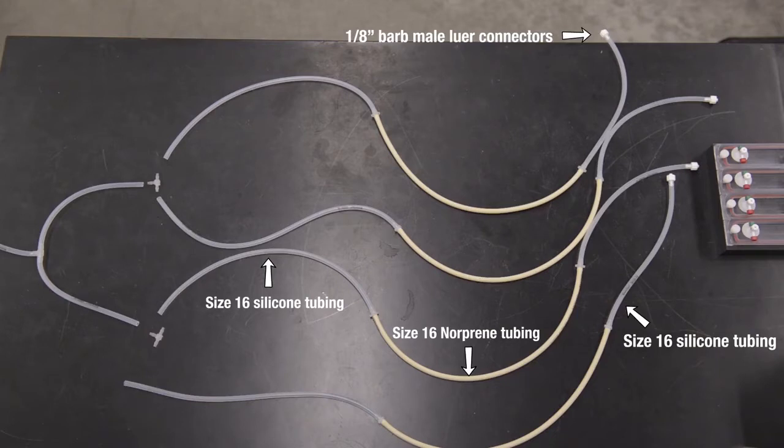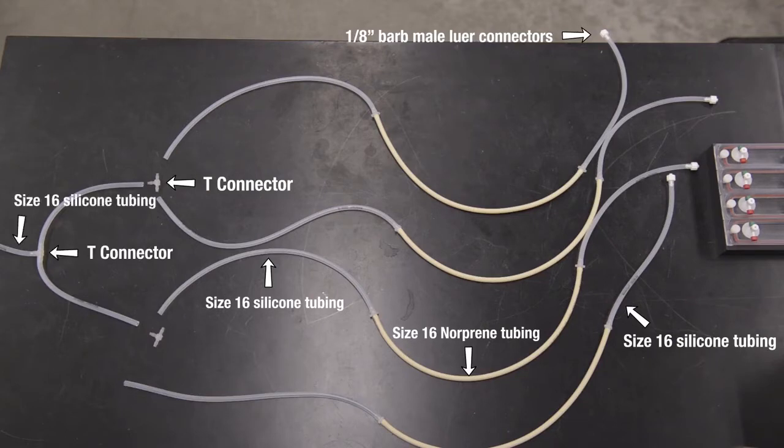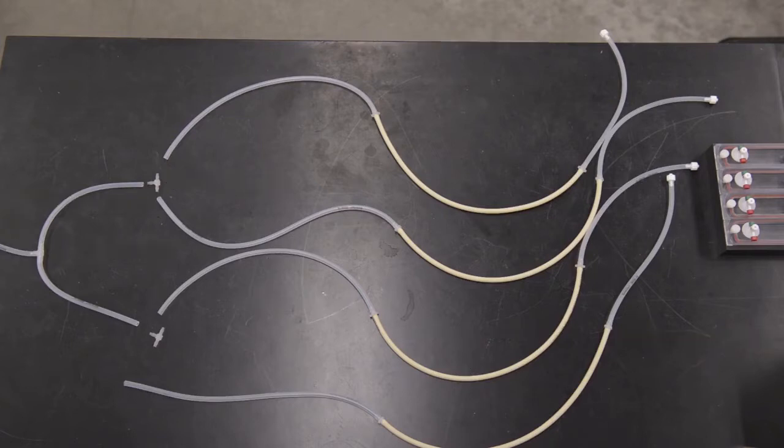Splice the four silicone tubing pieces into two lines with two T connectors. Splice the two lines into one with a third T connector. Add a length of size 16 silicone tubing to the single T connector.